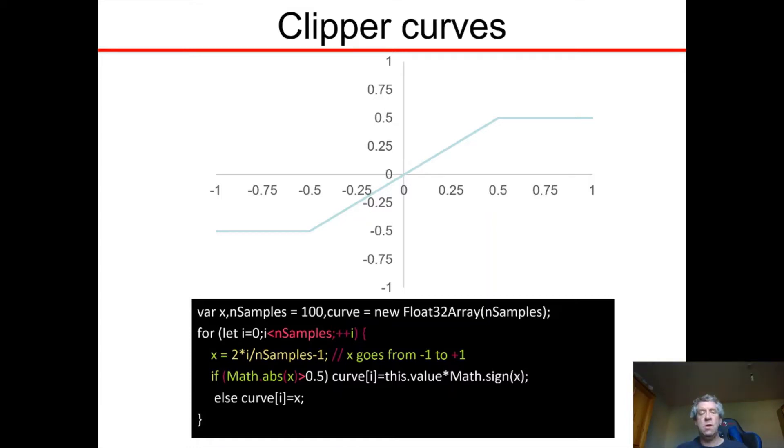So now we want to take those x values and produce a curve such that the curve gives the proper output for clipping. If the absolute value of x is greater than 0.5, which means that x, which goes from -1 to +1, could either be below -0.5 or above +0.5.